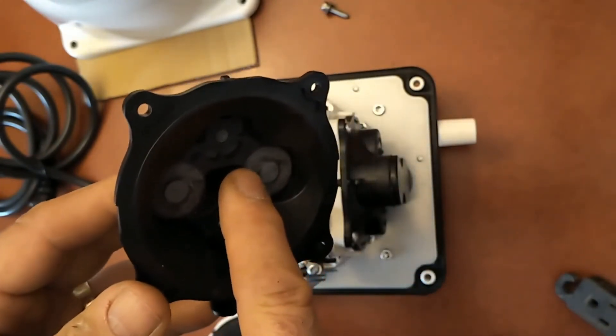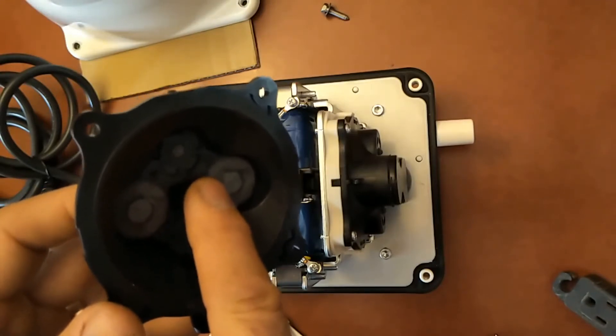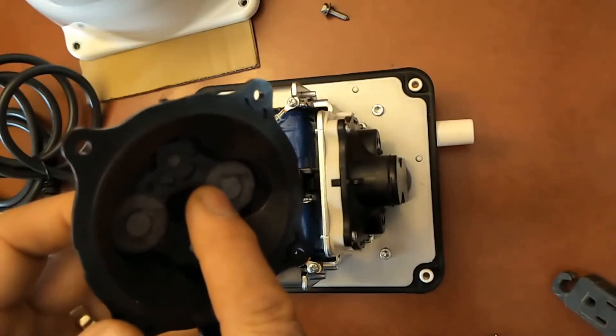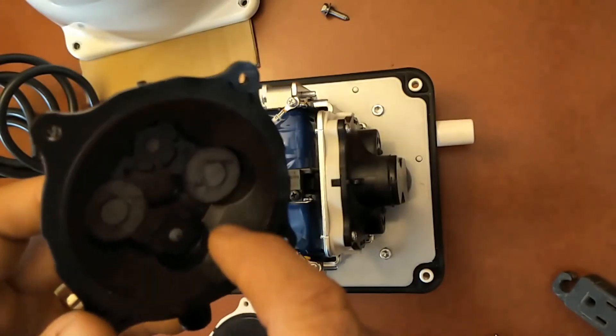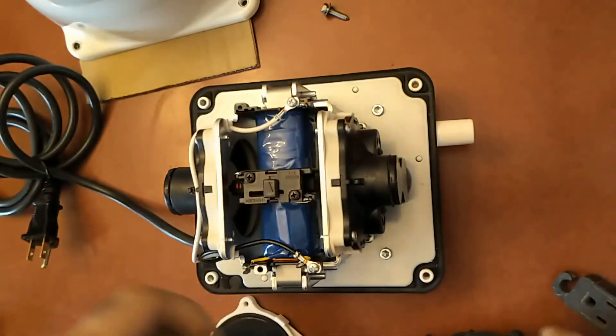Then it closes as the diaphragm pushes back to create air pressure. It closes to prevent the air from leaving the chamber block. Air is directed through this other valve down into this neck, into the base of the pump.